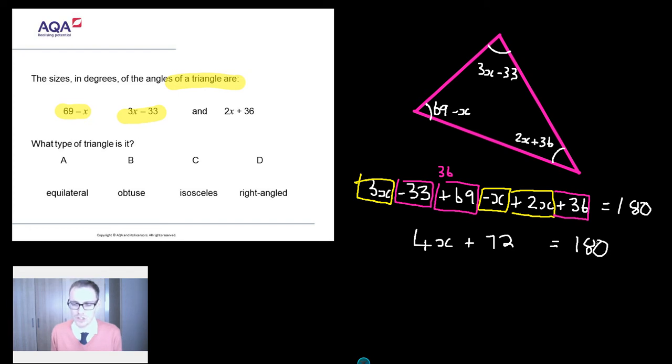Okay, equation to solve. Mr Barton's patented wiggly line technique. Let's take 72 off both sides. 4x equals, got rid of my 72 there, 180 take 72 is hopefully 108. And then divide both sides by 4, x equals. Quick way of dividing by 4, halve it, halve it again. Half of 108 is 54, half of 54 is 27.